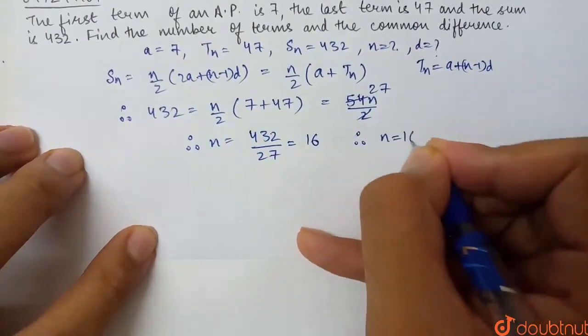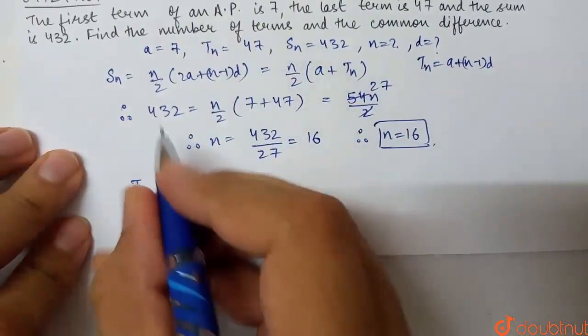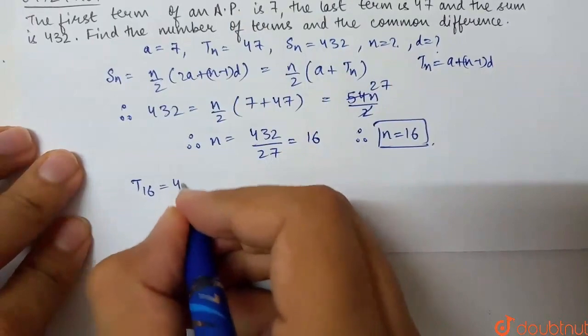That is 16. Therefore, the number of terms is 16. We have the last term given, N is 16 means T16 is 47.